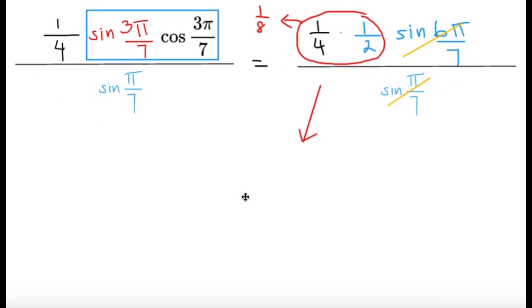So since only the one eighth remains, the final answer is going to be one eighth. And this is the proof on why cosine pi over seven times cosine two pi over seven times cosine three pi over seven equals one eighth. Hopefully, you guys learned something new from this video, and I'll see you in the next one. Bye bye!